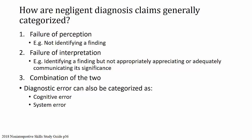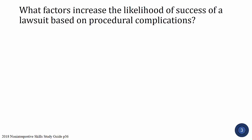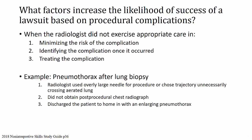What factors increase the likelihood of success of a lawsuit based on procedural complications? A lawsuit is more likely to be successful when the radiologist did not exercise appropriate care in: number one, minimizing the risk of the complication; number two, identifying the complication once it occurred; and number three, treating the complication. For example, in a pneumothorax after lung biopsy, using an overly large needle or a trajectory unnecessarily crossing aerated lung, failing to obtain a post-procedural chest radiograph, or discharging a patient with an enlarging pneumothorax would all increase the likelihood of a successful lawsuit.